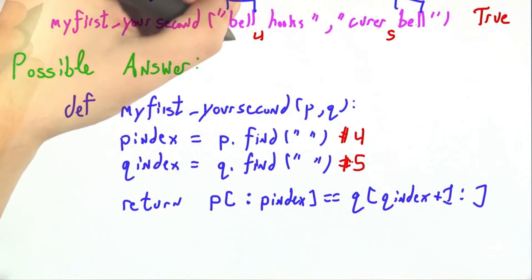And in fact in our example, it is. Now what I want to do is select out the first word in p. So I want everything from the beginning all the way up to, but not including this space.